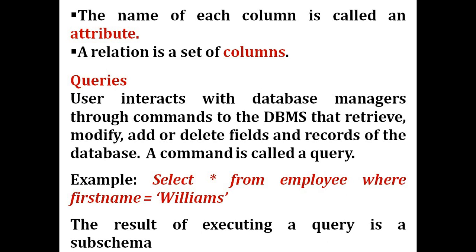How does a user interact with the database? The user interacts by passing queries and gets the results. The operations performed include retrieving data, modifying data, and adding or deleting fields and records. For example: SELECT * FROM employee WHERE first_name = 'Williams'. This query is passed by a user to the DBMS, and all records pertaining to first name Williams will be displayed. The result of executing a query is a sub-schema — only the relevant part of the database is displayed.